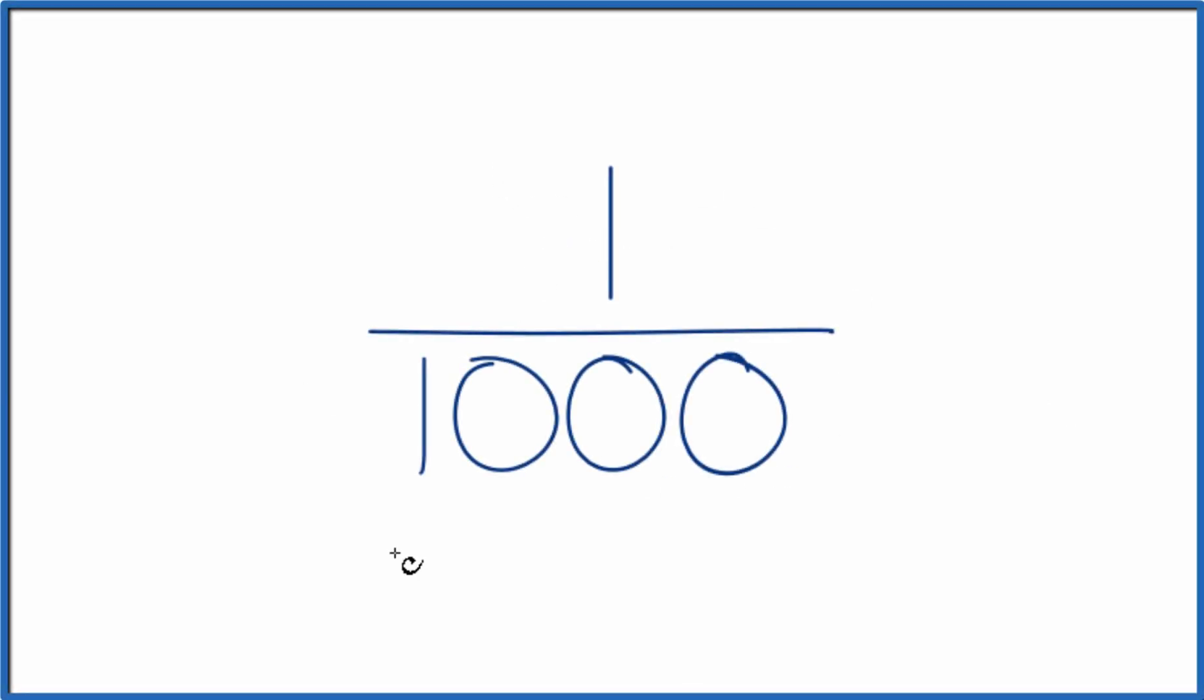Let's convert 1/1000. That's 1 over 1,000 to a decimal. So we have our fraction, we want to have this as a decimal. There are two ways we could do it.